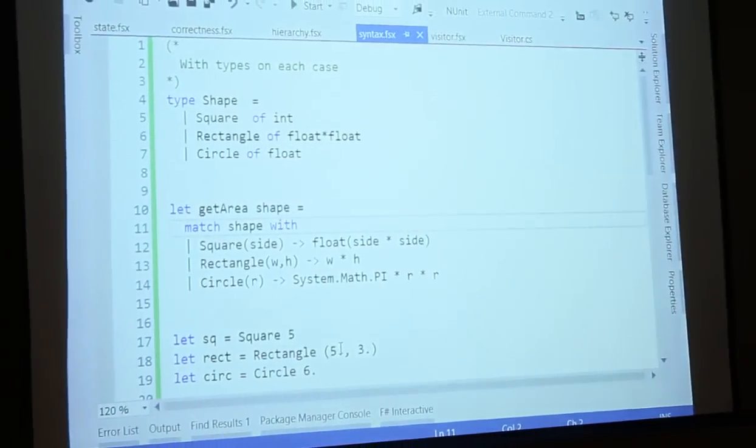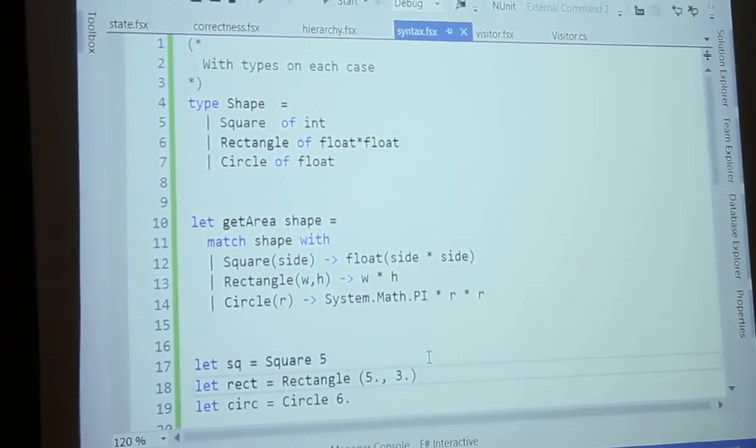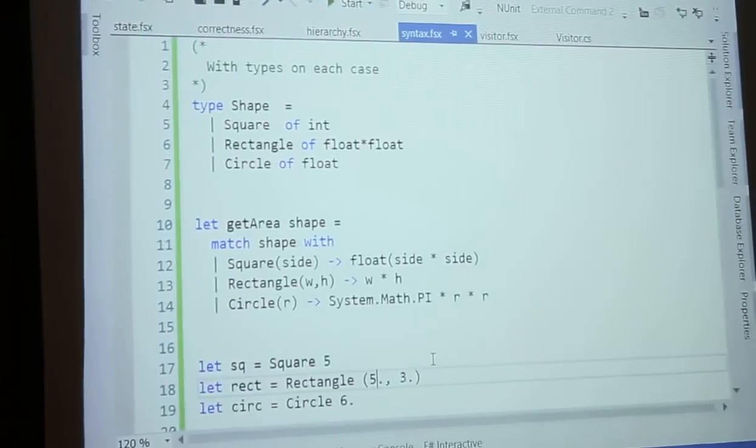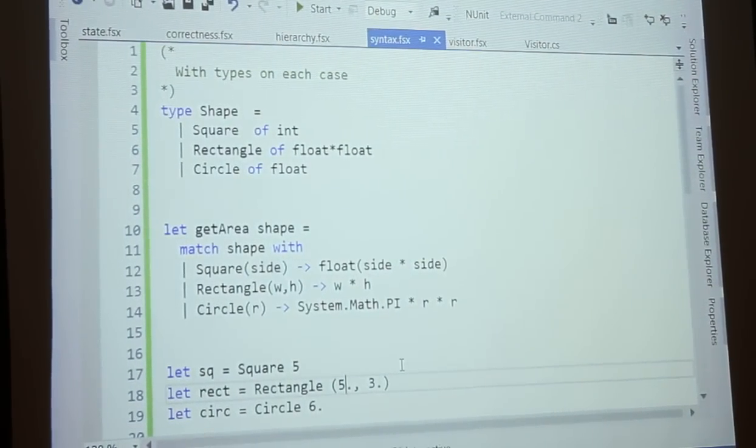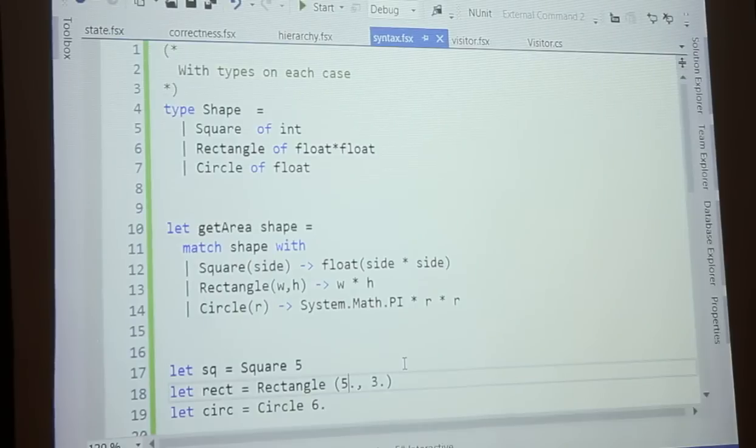And then this dot here, this is just shorthand because these are floats. And you do dot, and it's zero, or whatever. Because if I say five, it looks like an int. And then the compiler complains, and it says, hey, you can't create a rectangle with the int. It has to be a float. So, I just do the dot. That's in shorthand.